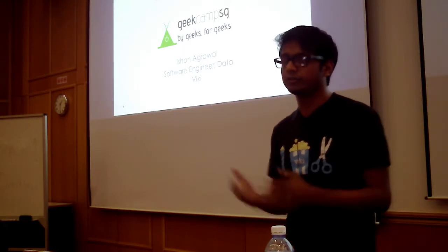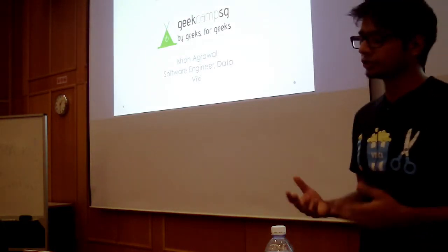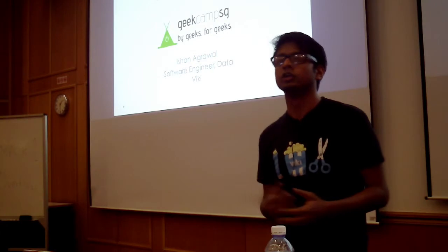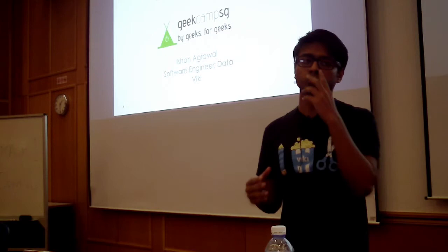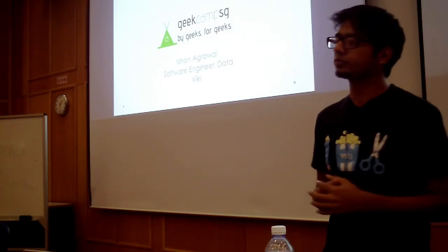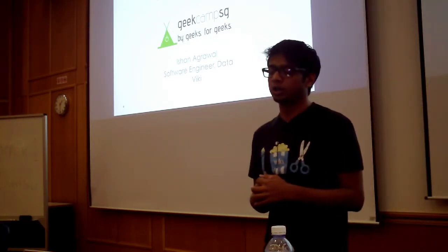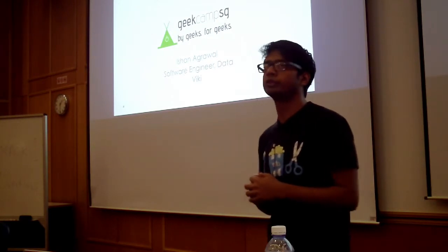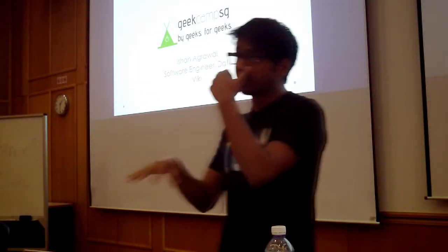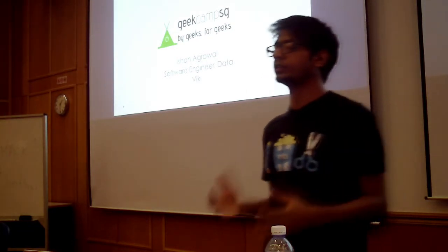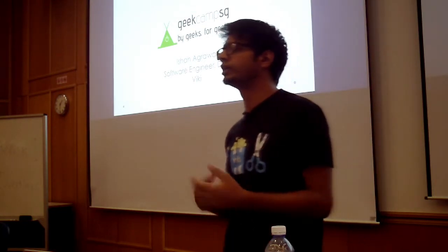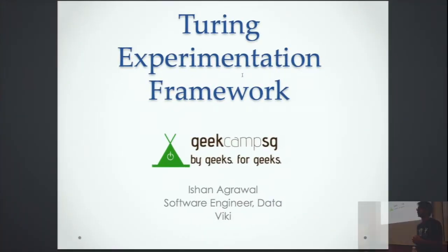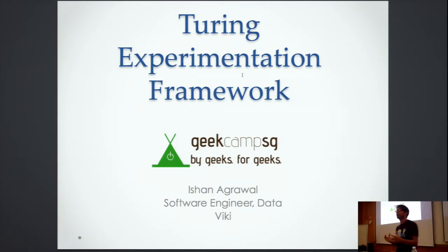A little introduction about myself. I'm Ishar, working as a software engineer in the data team at WIKI, building the big data pipeline, as well as working on tools like a real-time alerting system, real-time charting, and, of course, the experimentation framework I built for them. Today I'm going to be focusing on the experimentation framework — why we built it, how we built it, and a bit about A/B testing and the use of the experimentation framework we built at WIKI.